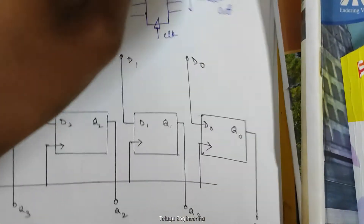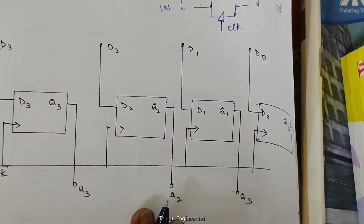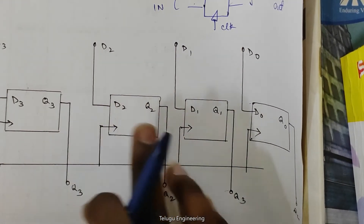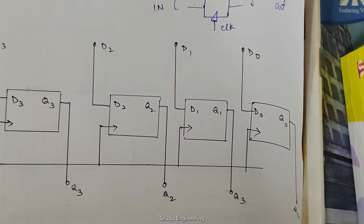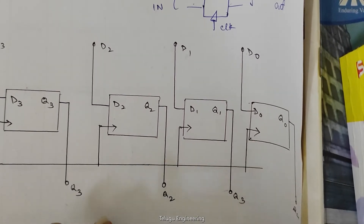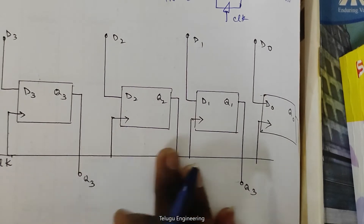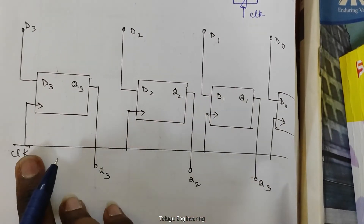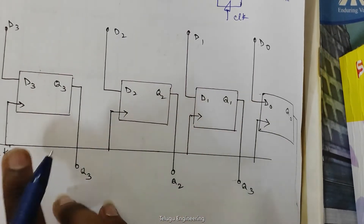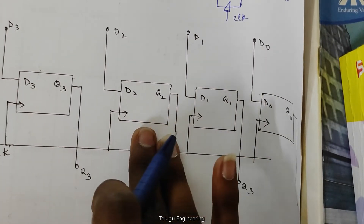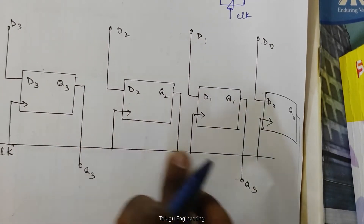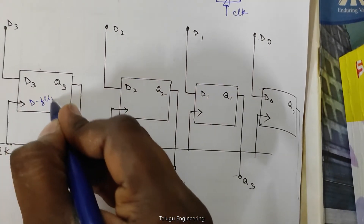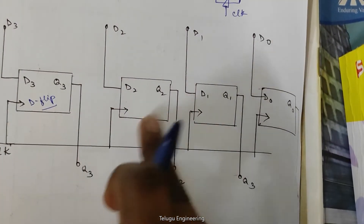Coming to the basic block diagram, we have to understand this block diagram. We have considered four different flip-flops. In order to get n number of bits, we will be taking n number of flip-flops. In this block diagram, we can see that the entire arrangement is in the form of synchronization. We can say it is synchronization because the same single clock pulse is applied for all the flip-flops. We are using D flip-flops.